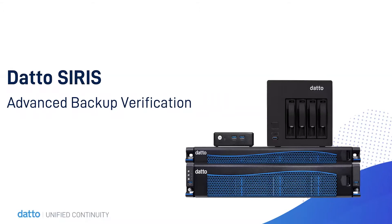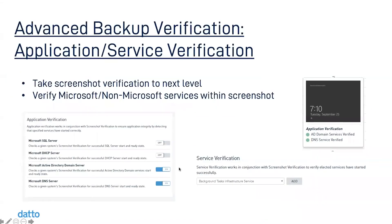Let's begin with screenshot verification. In its most basic definition, screenshot verification is designed to verify bootability of a specific backup or recovery point. Because of Datto's proprietary inverse chain technology, each recovery point is stored as its own fully bootable image. What this means is that we can virtualize any recovery point within the backup chain without issue. Because the backups are stored in a disk image and there's already a hypervisor installed on your Datto appliance, this process is much more streamlined.